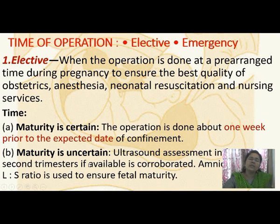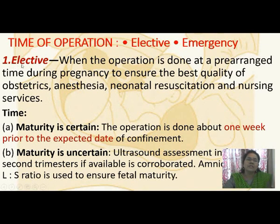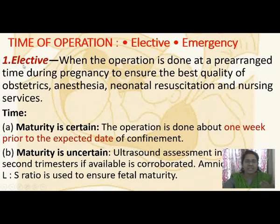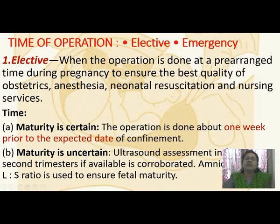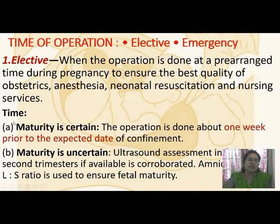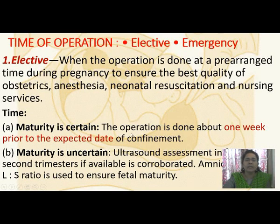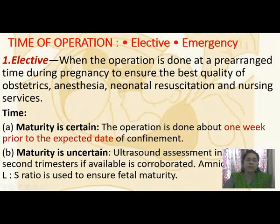According to the time of operation, caesarean section is divided into elective and emergency. Elective caesarean section — 'elective' means we select — is when the operation is done at a prearranged time during pregnancy because of some problems. It is usually planned during the pregnancy to ensure the best quality of obstetric, anaesthesia, and neonatal resuscitation services. When maturity is certain, the operation is done about one week prior to the expected date of confinement.